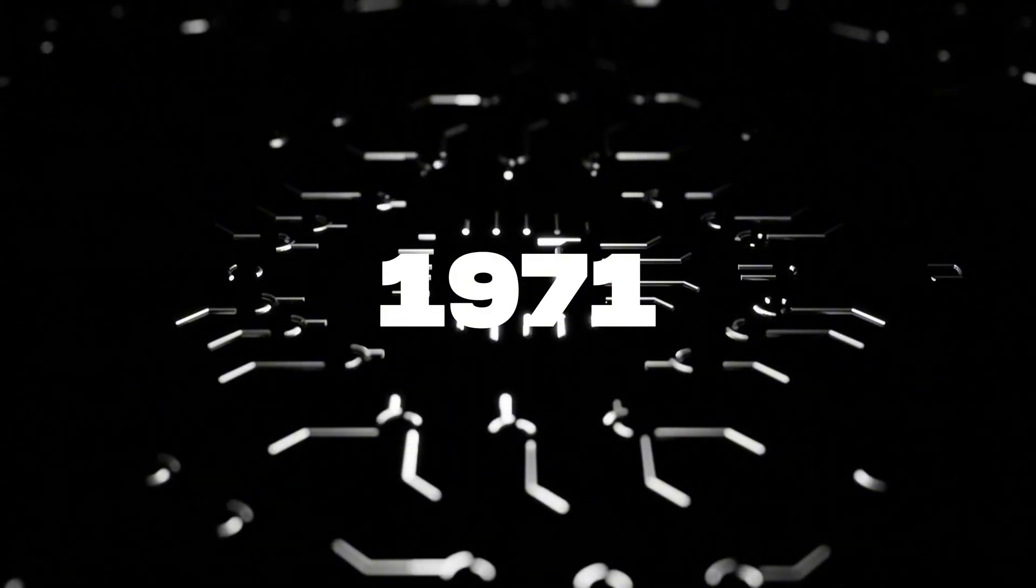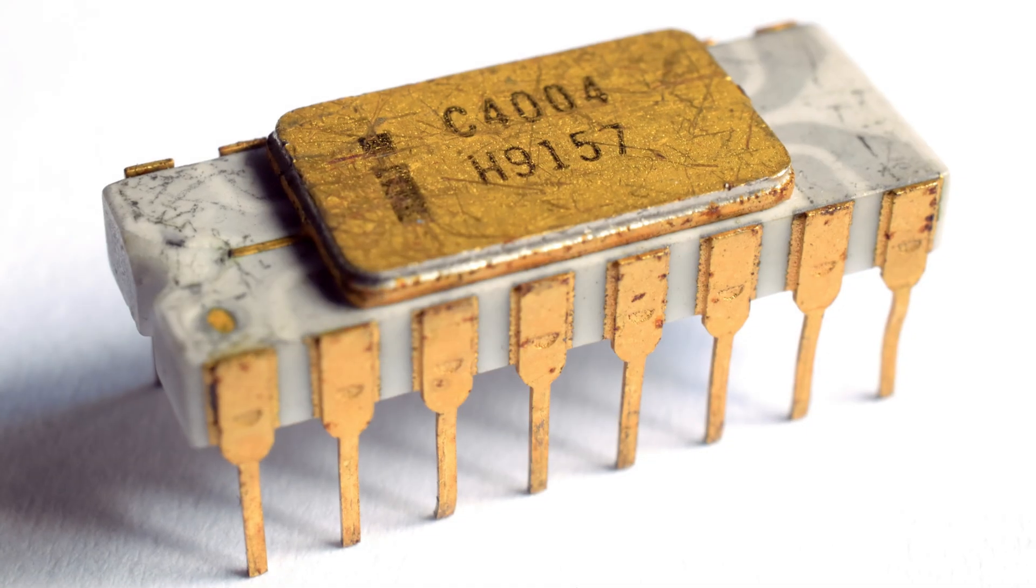While you could argue the ENIAC was a massive leap forward in computing, the silicon age didn't really begin until 1971, with the invention of the microprocessor. This little guy, the Intel 4004, was significantly more powerful than the ENIAC could ever dream to be, and it could fit on your fingertip.